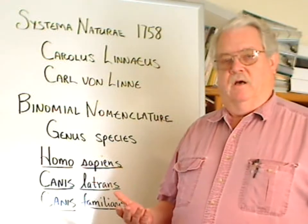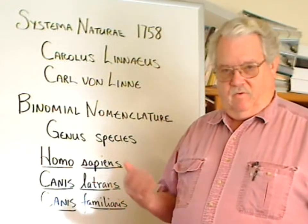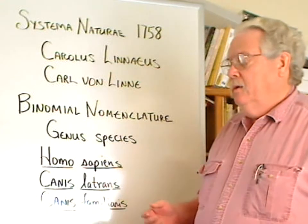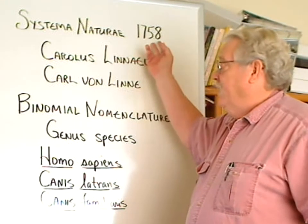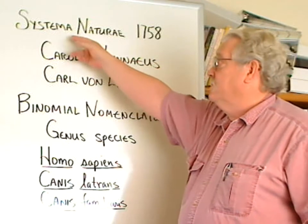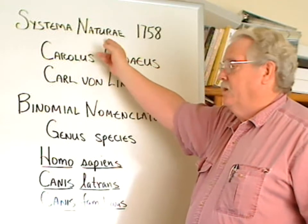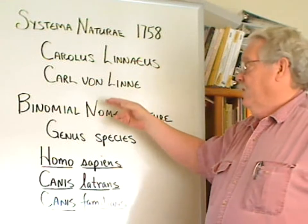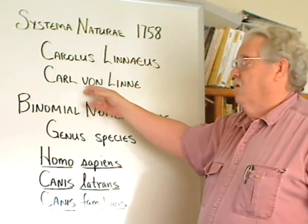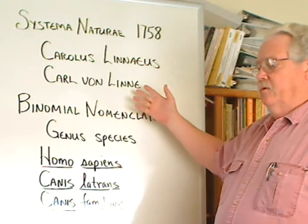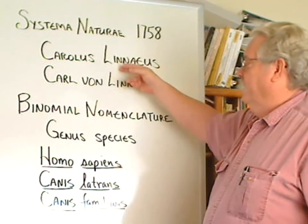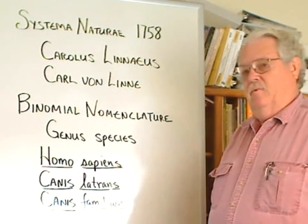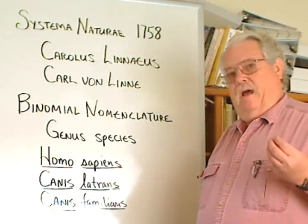Let's talk about modern taxonomy and the use of Latin in scientific naming. In 1758, an important book was written — System of Nature — by the author Carolus Linnaeus. His real name was Carl von Linn. You'll notice something about both the name of the book and the name of the author: they were written in a Latin form.